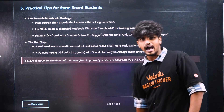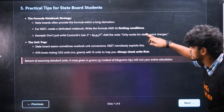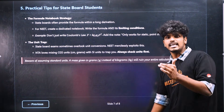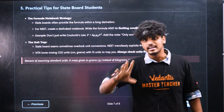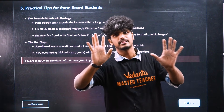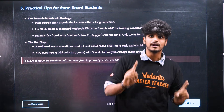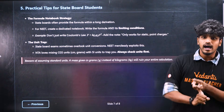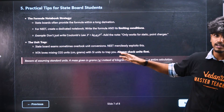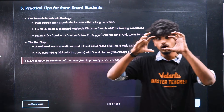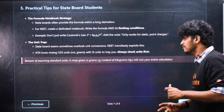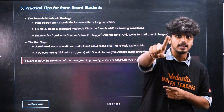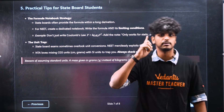Coulomb's law: F equals K Q1 Q2 by R squared. Only works for static point charges — that is the limiting condition. You will be able to do that in state board general units. But when you apply it, it will catch you out. You can do it for CGS units or SI units. So units are very nice and tight. Beware of assuming standard units — a mass given in grams instead of kilograms will ruin your entire calculations.